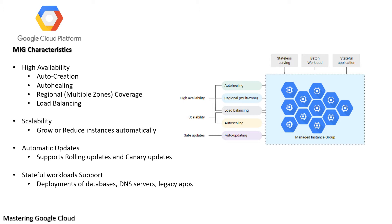You can also set up an auto healing policy that relies on an application-based health check, which periodically verifies that your application responds as expected on each of the MIG instances. If the application is not responding on a VM, that VM is automatically recreated. You can spread your application load across multiple zones within the same region, which protects against zonal failures. MIGs also work with load balancing services to distribute traffic across all instances in the group.